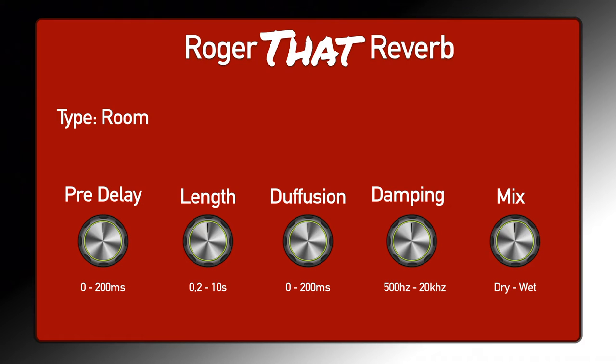A vocal can actually benefit from longer pre-delay because all the consonants and articulation will come through before the reverb tail, making the vocal feel closer without lowering the reverb amount. The next setting is the length of the reverb — how long the tail is going to be. It could be very short, like an ambience at 0.5 seconds, or very long like a cathedral at 8 seconds. The shorter the decay, the closer the signal feels; the longer, the further away — except if combined with a long pre-delay.